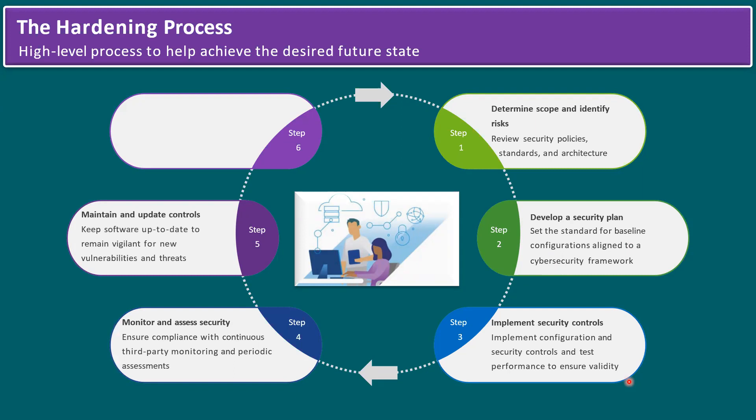Step five: maintain and update controls. Keep software up to date and remain vigilant for new vulnerabilities and threats. Keeping software up to date covers all infrastructure layers: hardware must have the latest firmware, ESXi should run the latest patches, and operating systems should maintain monthly patches — for example, Microsoft releases patches every second Tuesday, and Red Hat patches should also be kept current. For patching, organizations use centralized tools such as SCCM for Microsoft, Red Hat Satellite Server for Linux, or third-party tools like IBM BigFix.